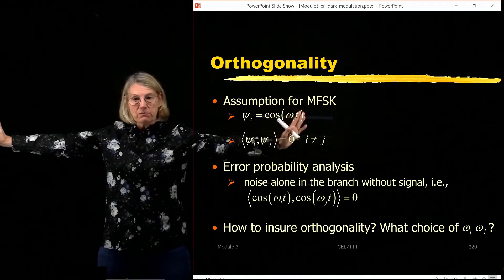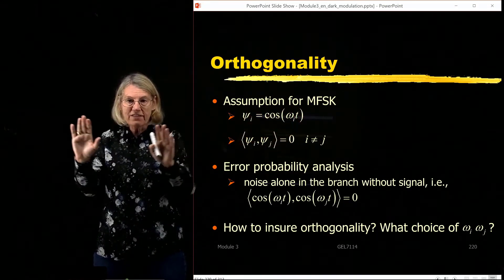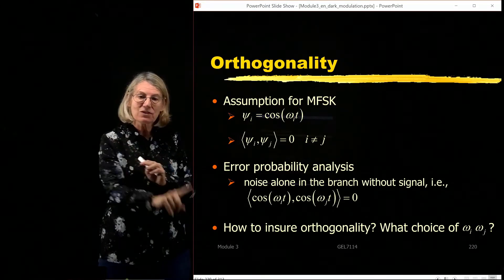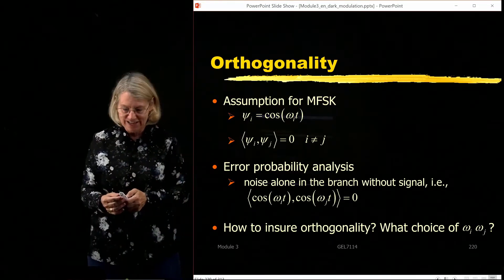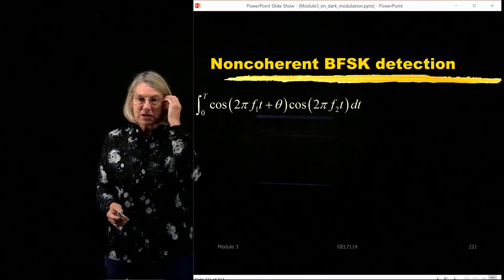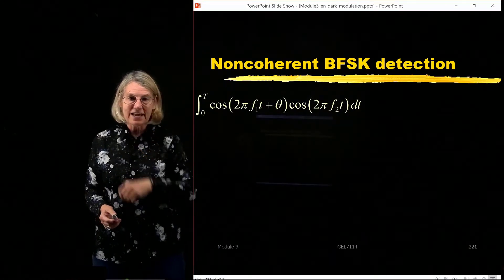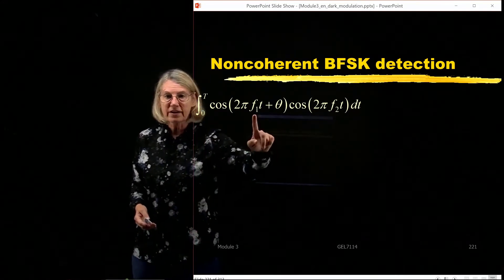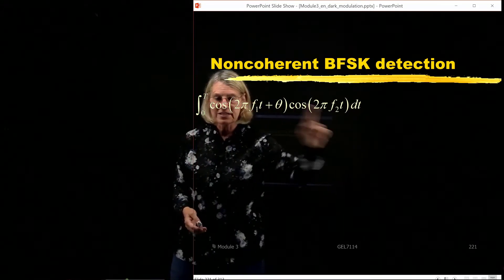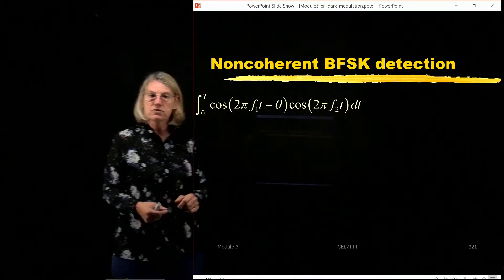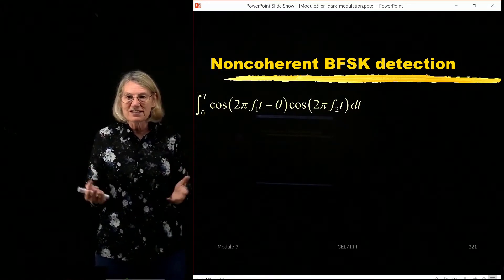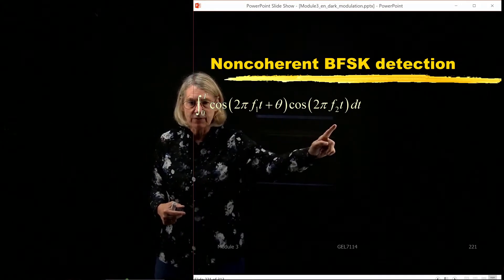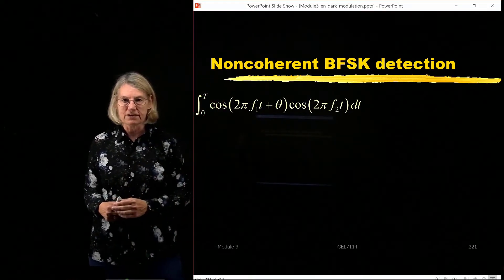So how is it that we assure this orthogonality? How can I choose these two frequencies, omega i and omega j to make sure that they really are orthogonal to one another? Again, if I make them really far apart, maybe that'd be easy, but I want to bring them together and I want to know how tightly, how closely can I bring them and still respect this orthogonality. So I'm going to take the inner product. This is the inner product of frequency one and frequency two. And I'm going to see what does it take to make this zero, to make them orthogonal? What are the criteria on F1 and F2 that I can ensure that this will always give a zero?